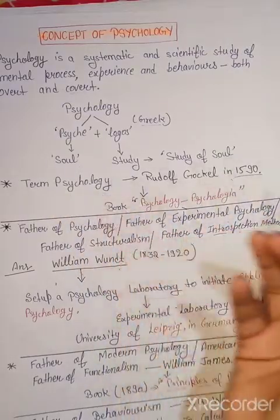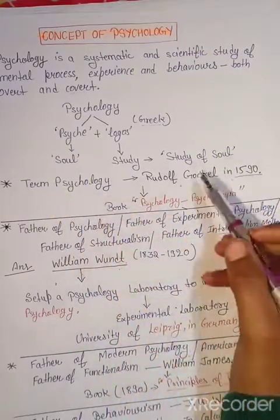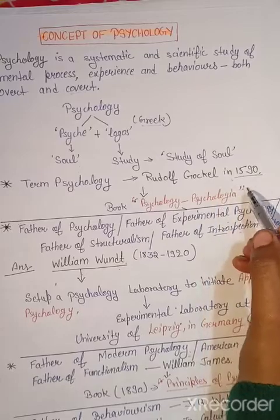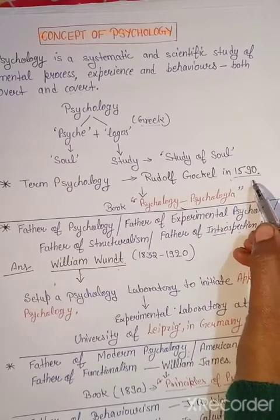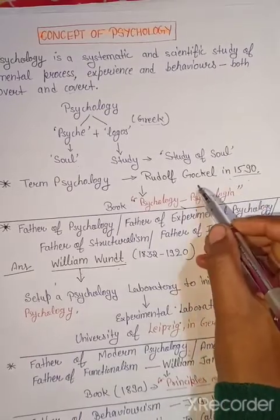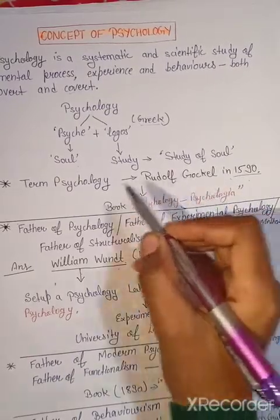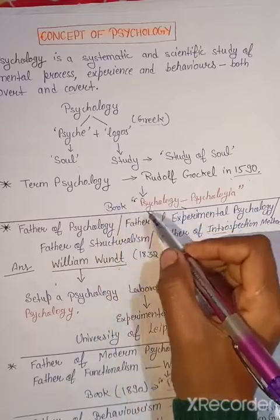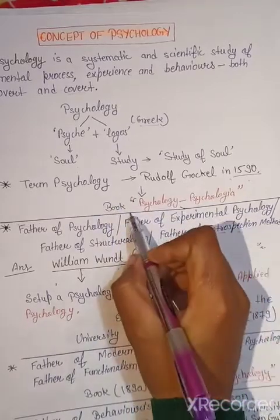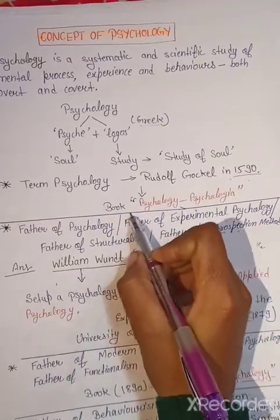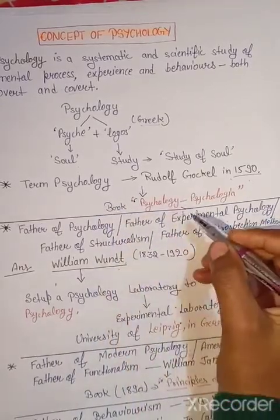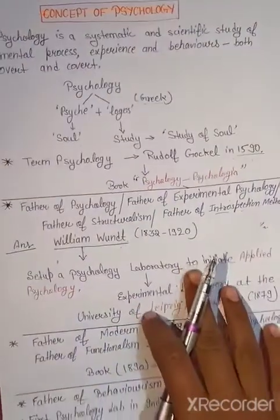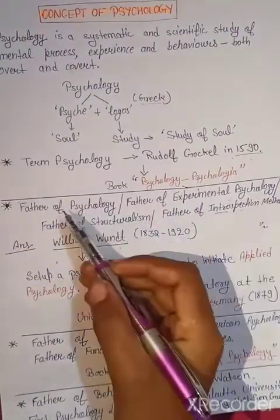Term psychology किसने दी थी? यह दी थी Rudolph Gokin ने, in 1590 में. इन्होंने एक book भी लिखी थी psychology से related, that is 'Psychology Psychosia.' और यहां से question पूछा जाता है.